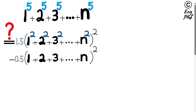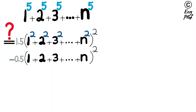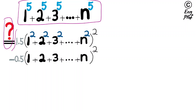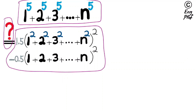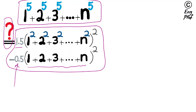In this video, I would like to provide a quick proof for this interesting math equality, which says that the sum of the fifth powers of consecutive integers is equal to 1.5 times the sum of the squared integers for consecutive integers raised to the power 2, minus 0.5 times the sum of consecutive integers.